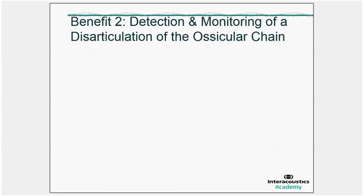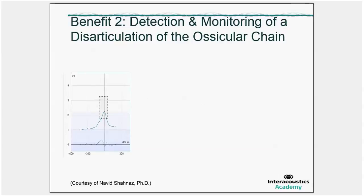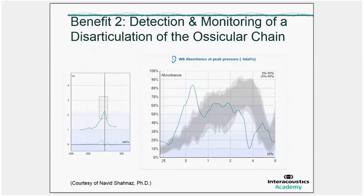Benefit number two. The detection and monitoring of a disarticulation of the ossicular chain. When using traditional tympanometry, then we expect a peaky tympanogram, but we cannot differentiate between a flaccid eardrum or a disarticulation of the ossicular chain. Now, with absorbance we can. This is a very nice example where we see that there is a high peak in the lower frequencies. There is also a very low peak between 3,000 and 4,000 Hz. But we don't look at that one. The relevance is in the very high peak close to the resonance frequency in the lower frequencies. This is a typical pattern for a disarticulation.